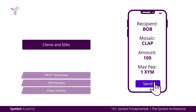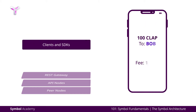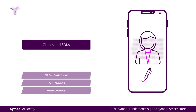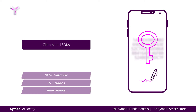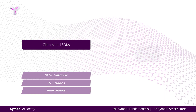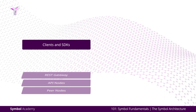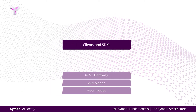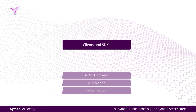Alice presses send when she confirms all the data is correctly entered. Before the transaction is sent to the Symbol network, the software development kits gather all the information together and have the transaction signed by Alice's private key. The wallet app then announces the transaction to the network. Up until here, Alice is accessing the clients and SDKs tier of the Symbol architecture.